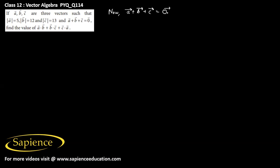Since a + b + c equals the zero vector, if we take the dot product of (a + b + c) with itself, that will equal zero vector dot zero vector, which is zero.